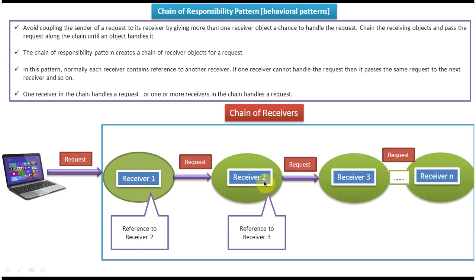Receiver two will then check if further processing is needed. If it is needed, it will pass the request to the next receiver in the chain, which is receiver three. If it is not needed, it won't pass the request to the next receiver. That is how it works. Now I will read out these explanations one by one so that you understand them very clearly.